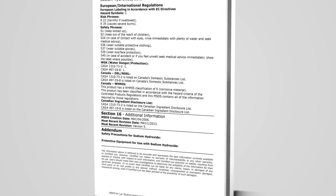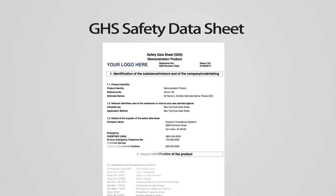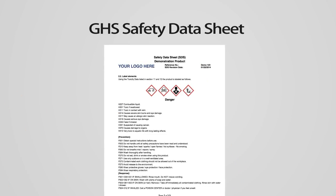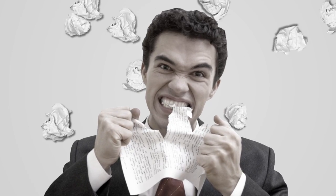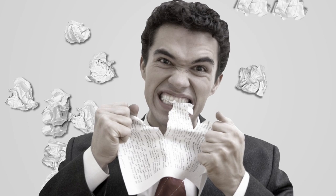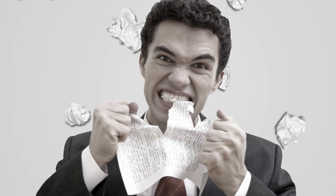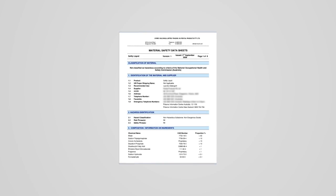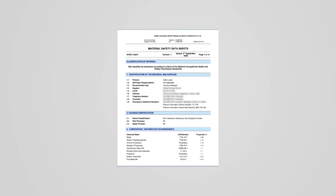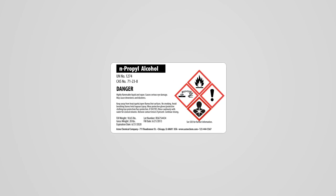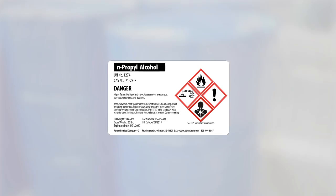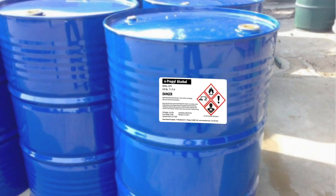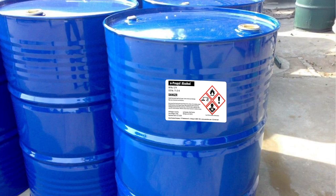Transitioning from MSDS to GHS-compatible SDS is complex and time-consuming. Not only does GHS conversion increase your workload without the right knowledge and tools, it can also cost up to tens of thousands of dollars. Generating accurate GHS-compliant SDS is critical because this determines your labeling information for all products. It's extremely important to get it right the first time.